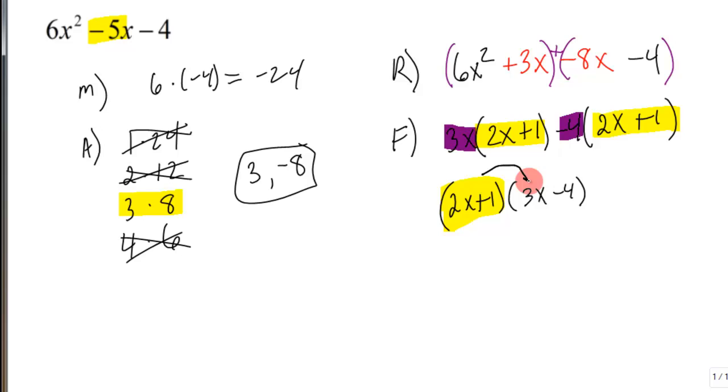And basically multiplying it like this. 2x plus 1 times 3x, there's this area here. 2x plus 1 times minus 4, that's this area over here.